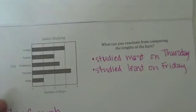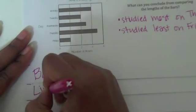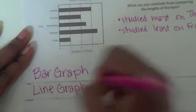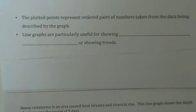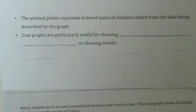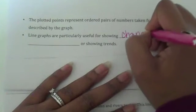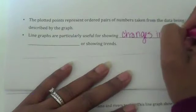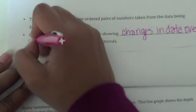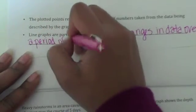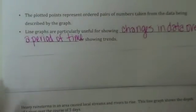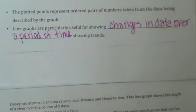The next graph — hopefully you know what type that is — it is a line graph. So I'm going to label that on my foldable. On a line graph, the plotted points represent ordered pairs of numbers taken from the data being described. Line graphs are particularly useful for showing changes in data over a period of time or showing trends.